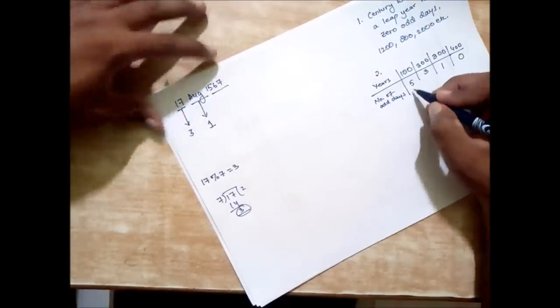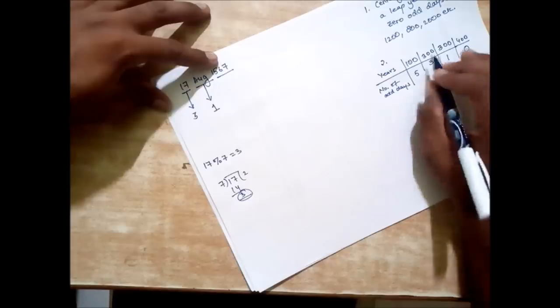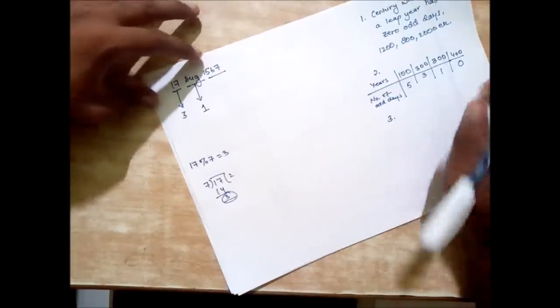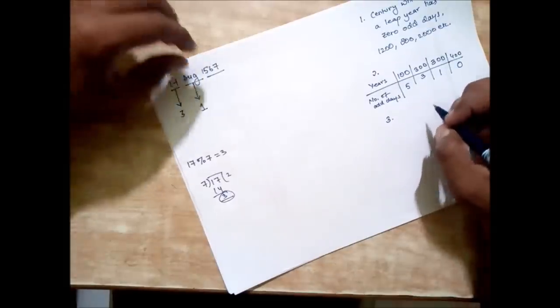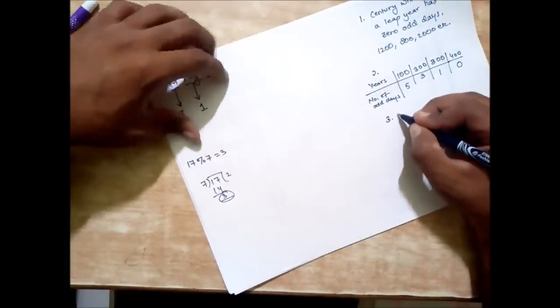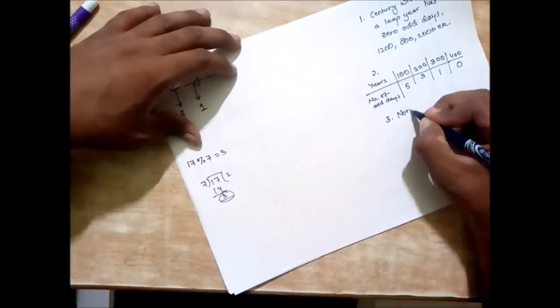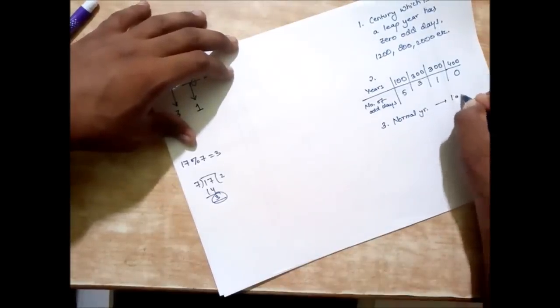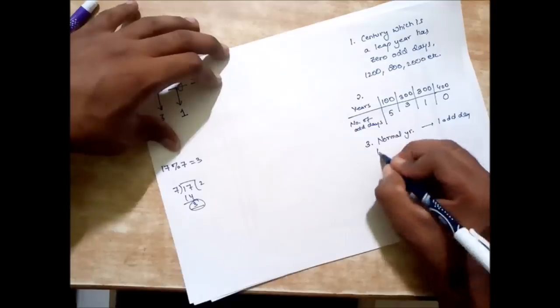So the series says 5, 3, 1, 0. You need to learn this. And the third thing is that a normal year which is not a leap year has one odd day, and a leap year has two odd days.